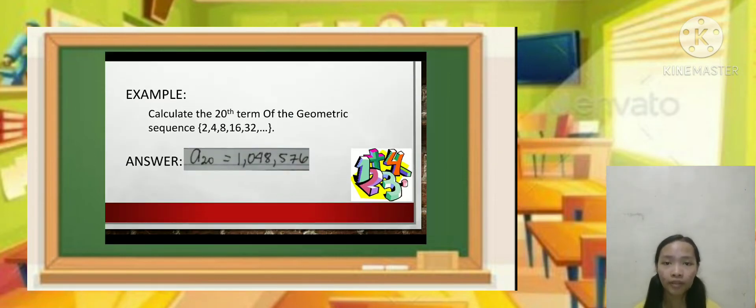To better understand, here's an example. Calculate the 20th term of the geometric sequence 2, 4, 8, 16, 32, and the rest. We need to find the 20th term. The answer I got is 1,048,576. To know how I got that answer, watch this video.